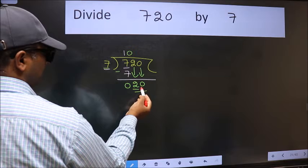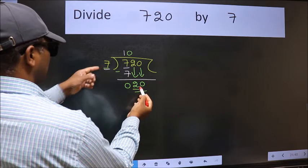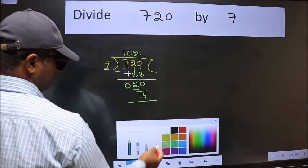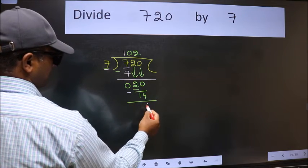Now 20. A number close to 20 in the 7 table is 7 times 2 is 14. Now we should subtract. We get 6.